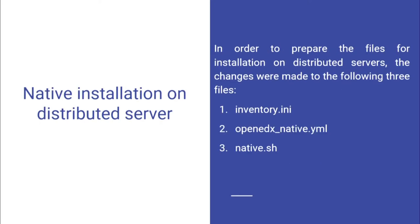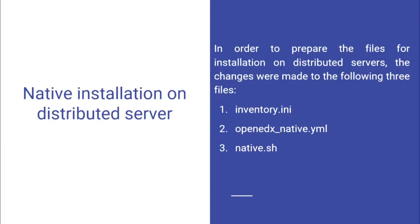Next we tried to distribute the platform on two servers. For that we need to make changes to three files. In inventory.ini, only localhost 127.0.0.1 is mentioned by default. In this file we mention the host names and host IPs where we want to install the servers. Then in open-edx-native.yml we need to group together the services according to which server we want to install them on.